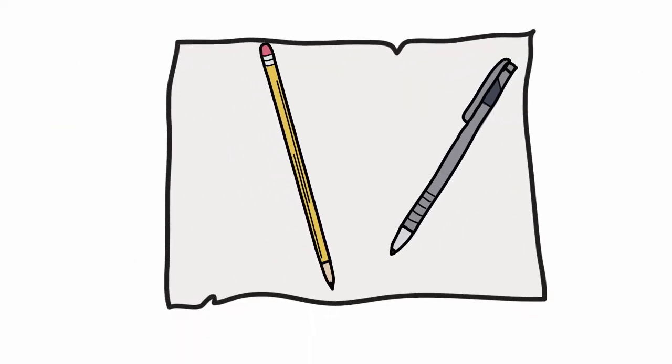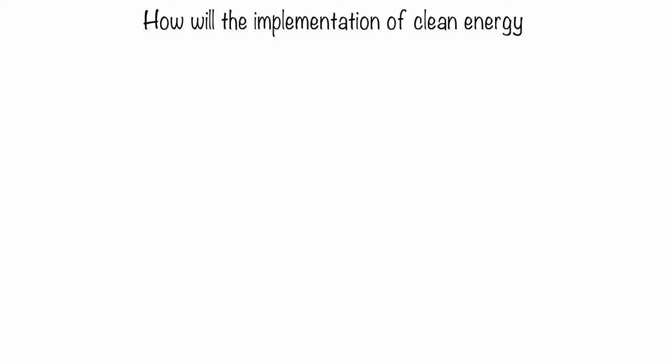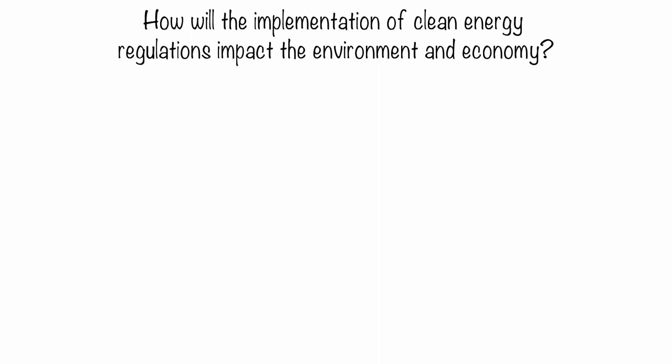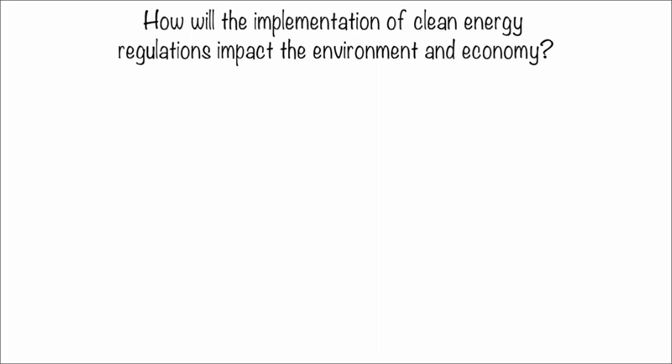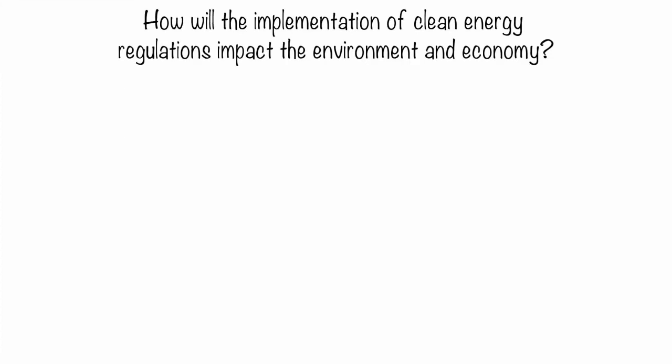Start by getting a piece of paper and a pen or pencil. Write your research question at the top of your paper. Before you can start searching for things, you have to identify keywords in your question and which main topic those keywords fit in, whether it be social, political, economic, or technical.